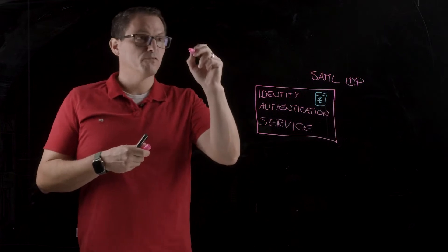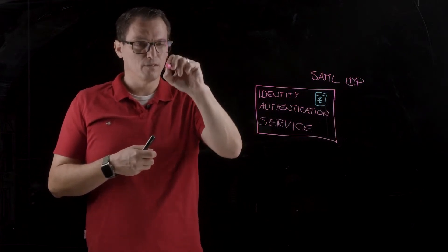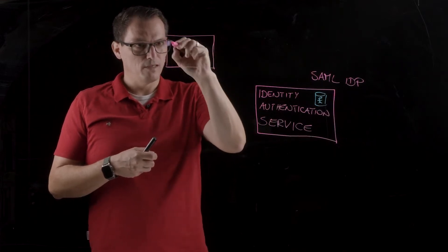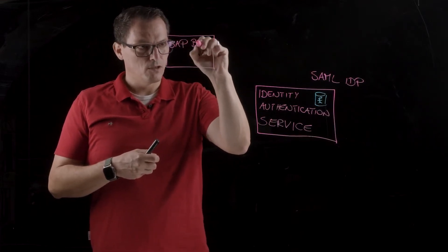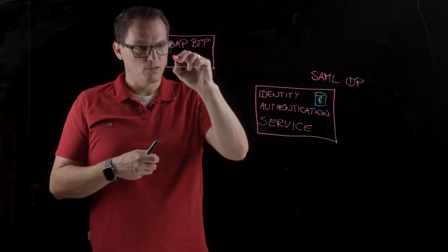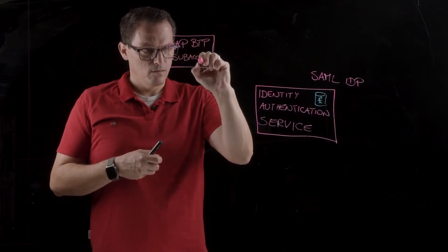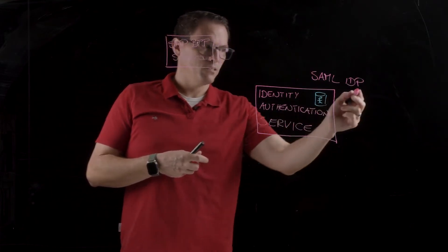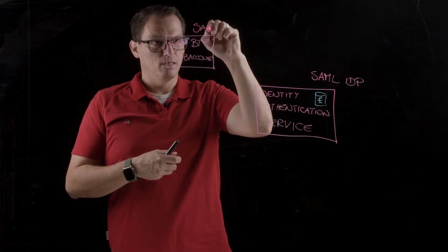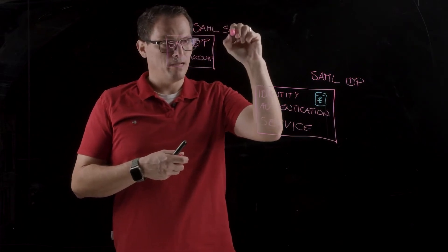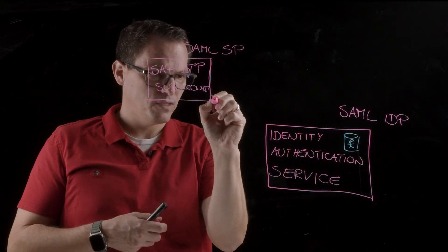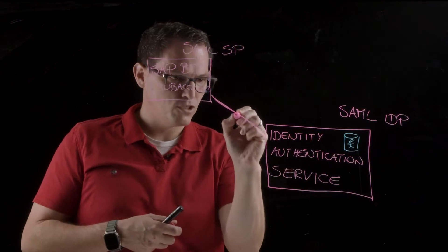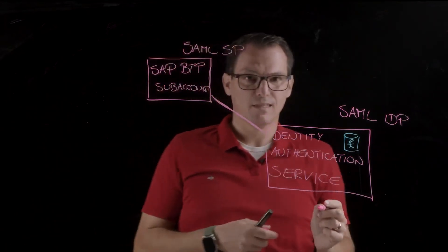And if you go here, we can have the BTP itself, the SAP account in the BTP. So, we have the SAP Business Technology Platform here on the SAP account level. And the SAP account is in the role of the SAML service provider. SAML SP, which is service provider. And this connects to the identity provider. So, there is a trusted relationship between the service provider and the identity provider.